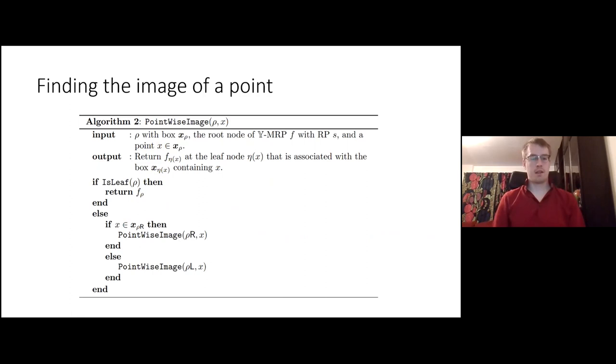We can get the image of a point using the pointwise image. It's a recursive function again, as many of these algorithms are. If it's a leaf that's base case, you just return the value of that leaf. Else you just look in the right or left sub box, depending on where the point is and you return the value from that sub box. You make a recursive call and you eventually get it.